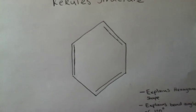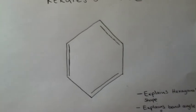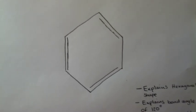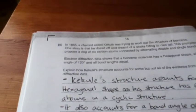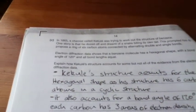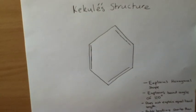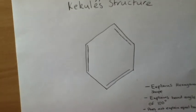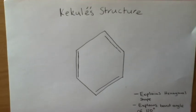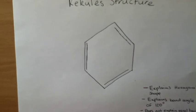And basically, as the question says, the electron diffraction data tells you that the bond lengths are equal. And therefore, Kekule's structure cannot represent the true structure of benzene. And for that reason, it just does not work.